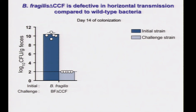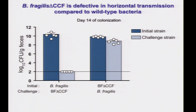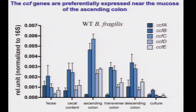Gavaging animals with laboratory-grown bacteria is artificial, so we looked at horizontal transmission. We took two groups of animals — one colonized with wild type, one with the mutant — co-housed them, and looked for transfer. In wild-type animals after 14 days of co-housing with mutant-colonized mice, the mutant never transfers into a mouse already established with wild type. But in the converse — the initial organism is the mutant — the wild type can very efficiently transfer over, colonizing every animal. Even during horizontal transmission there's a defect for the CCF genes.